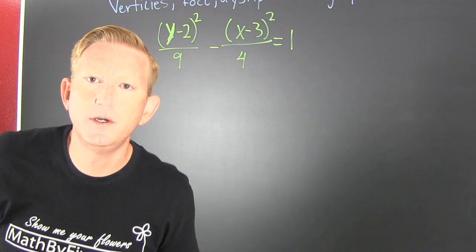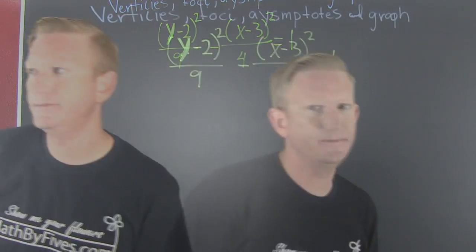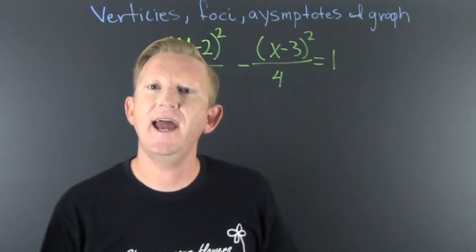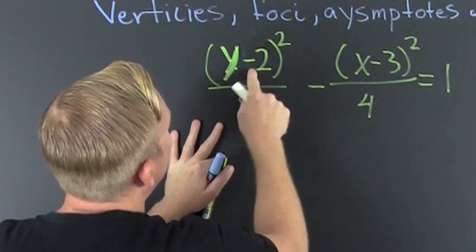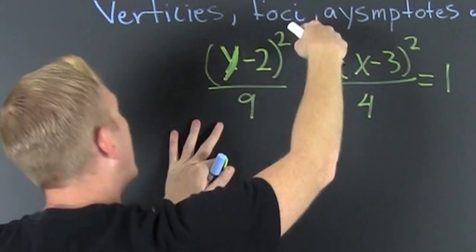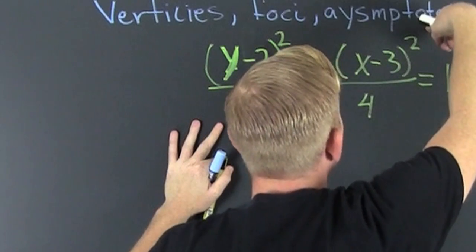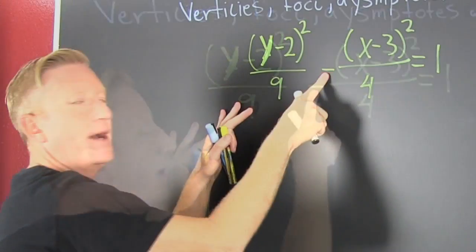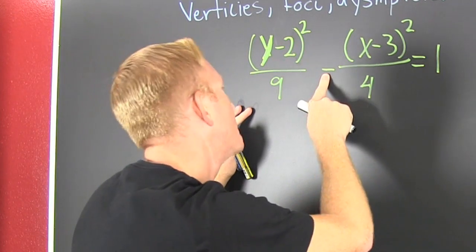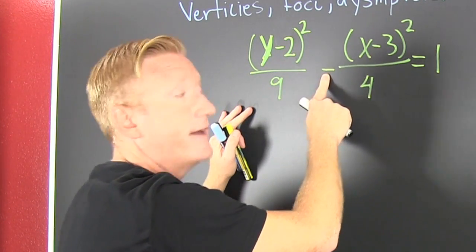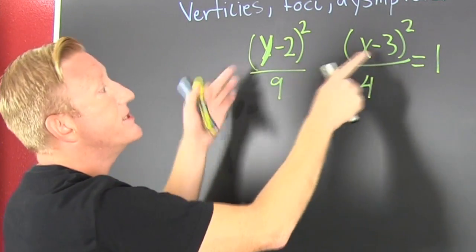Do you have an example where your hyperbola is off-center? Yeah, and this is it: (y - 2)² / 9 minus (x - 3)² / 4. There's a minus sign in between so we know it's a hyperbola. So first, why don't we graph it? All right, what do we need?